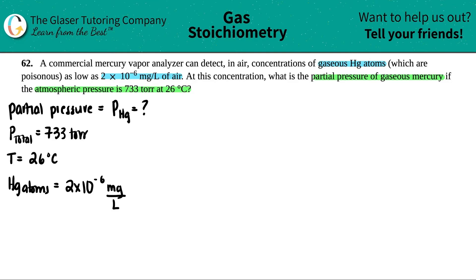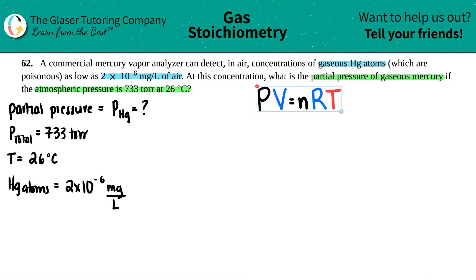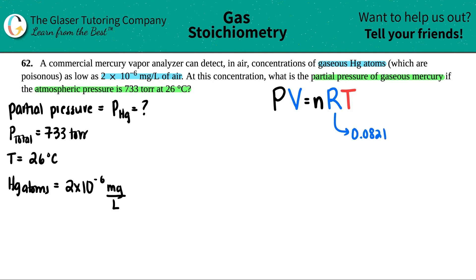There are no duplicate variables so the combined gas law is out. We have two other options: the ideal gas law PV = nRT, and the derivation PM = dRT. Since they're not asking for molar mass or density, I'll use PV = nRT. Remember, all units are locked into the R value: R = 0.0821 atm·L / mol·K.